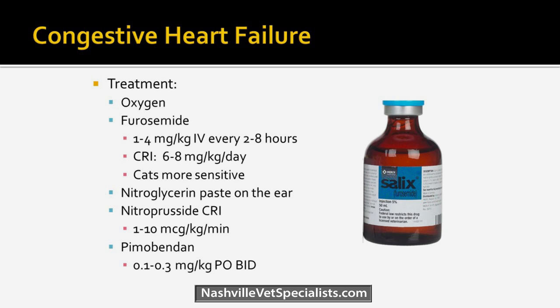Treatment is oxygen and furosemide — typically 1–4 mg/kg boluses every 2–8 hours. I usually start at 2 mg/kg in dogs and 1 mg/kg in cats, going up as needed. Sometimes they need a CRI. For cats not responsive to Lasix, nitroglycerin paste on the ear or nitroprusside CRI — which requires constant blood pressure monitoring — can be used. Pimobendan to improve contractility is also started right away in dogs without needing an echocardiogram. I typically wait to start ACE inhibitors like enalapril until they leave the hospital and are eating well.